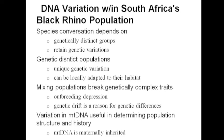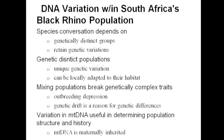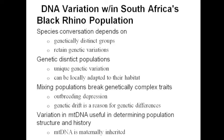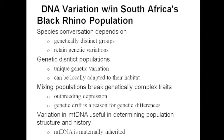We begin by looking into species conservation, which depends on three different factors. The first includes identifying the genetically distinct groups within South Africa — the different distinct groups of rhinos. We also look at management units and implementing strategies to retain genetic variation between these populations.